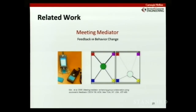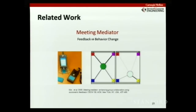Another group at MIT built a meeting mediator where participants wear a device measuring how much they're talking, and everyone sees a visualization on their mobile phone. The four corners indicate the four participants. The circle indicates balance in the meeting, and the color indicates level of interactivity. On one side you have a very balanced meeting; on the other, participant Y is dominating. They showed that providing this kind of feedback can change behavior.